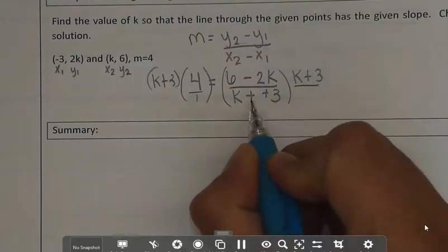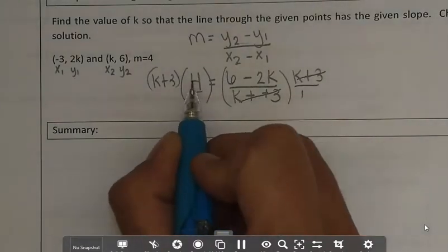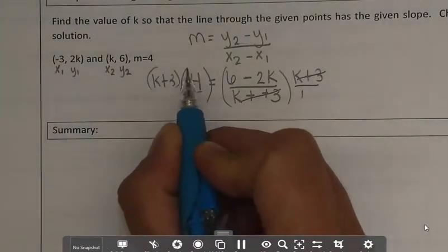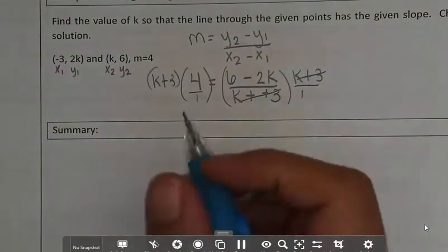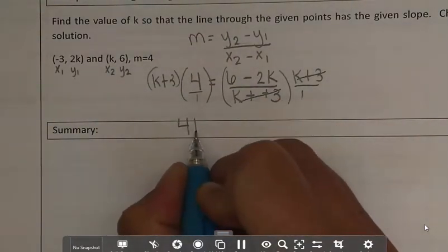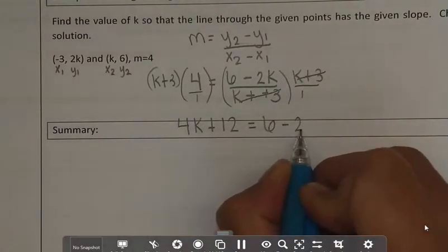So on this side, the k plus 3 and the k plus 3, those reduce. And on this side, probably the best thing I can do is distribute. So I'm going to have, and I'm going to move into my summary, but we've got plenty of room here for a summary. So we're going to do 4k plus 12 equals 6 minus 2k.